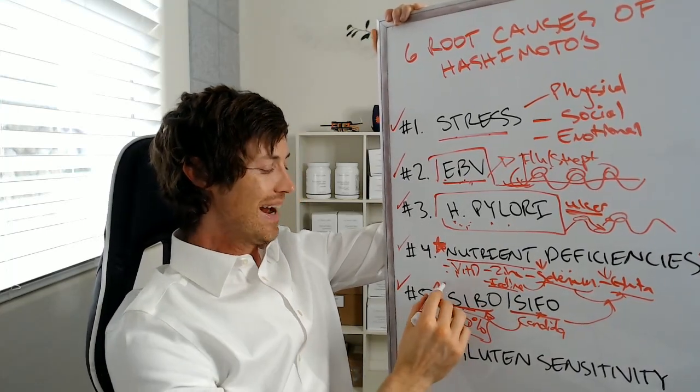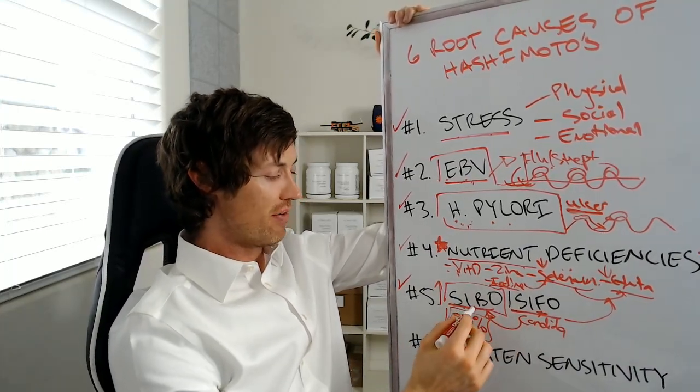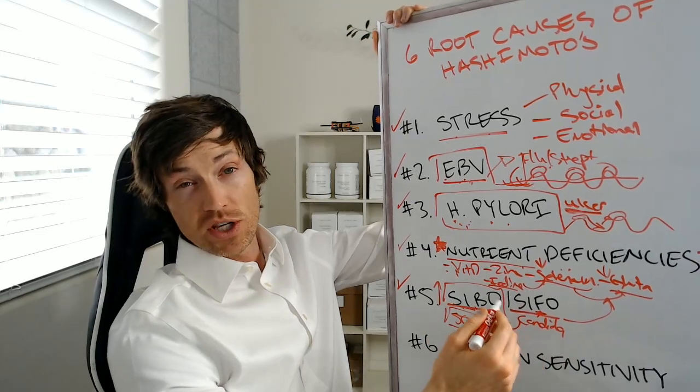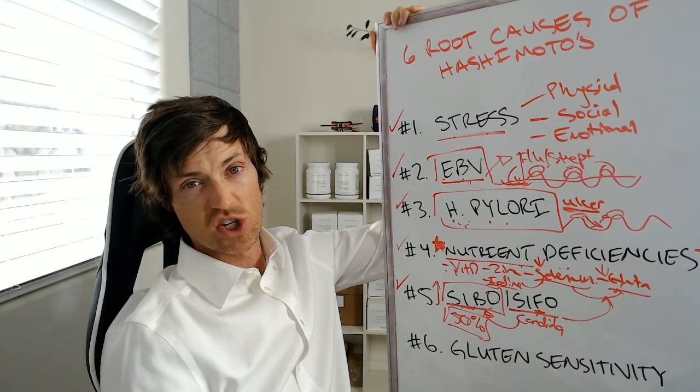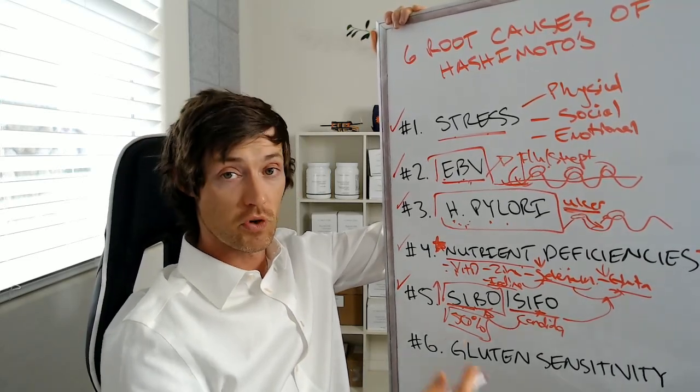So that's another really important one. You can test for these things. Right now, general doctors are probably not very good at checking for SIBO or SIFO. So you're probably going to have to see a gastroenterologist to get these sort of tests. But there are tests that you can get that should be covered by insurance that you can look at for both of those conditions.